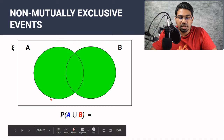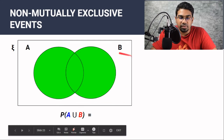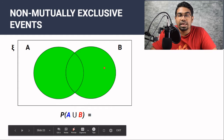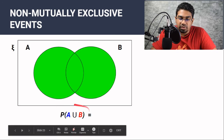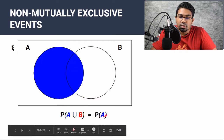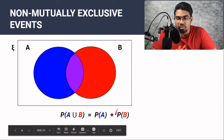When we are looking for the probability of A or B, it is represented as the probability of A union B. When we look at this Venn diagram, we can see that the green region covers A union B. So when we want to add them separately, the addition rule states that the probability of A union B will be the probability of A plus the probability of B.